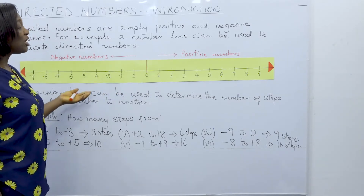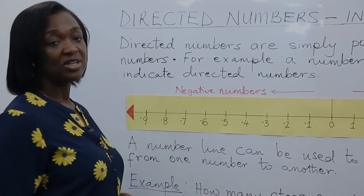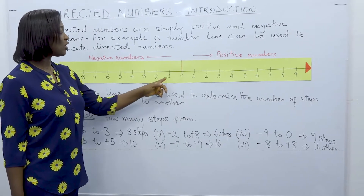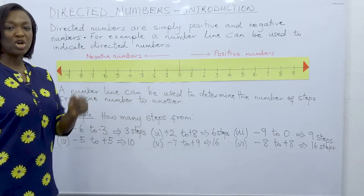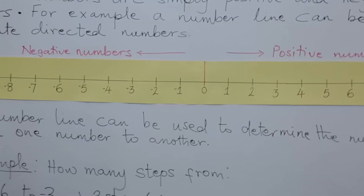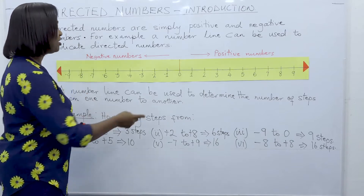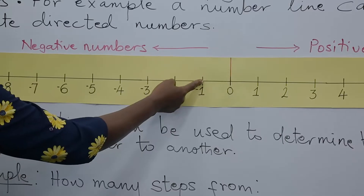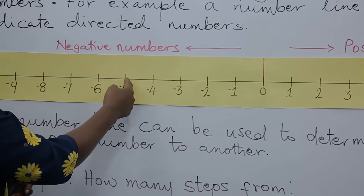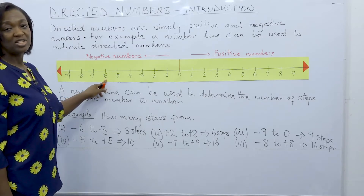You can use a number line like a thermometer to determine temperature increase or decrease. For example, if the temperature in a room is minus one degree Celsius and the temperature drops by five degrees, what is the new temperature? From minus one degree Celsius it drops by five: one, two, three, four, five. The new temperature in the room will be minus six degrees Celsius.